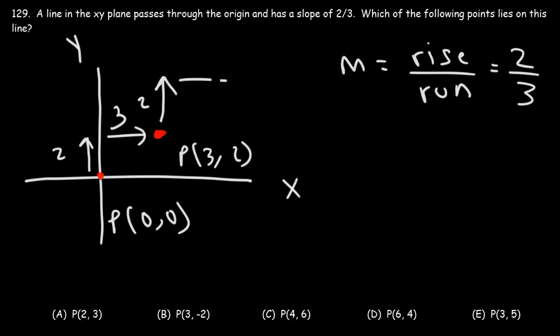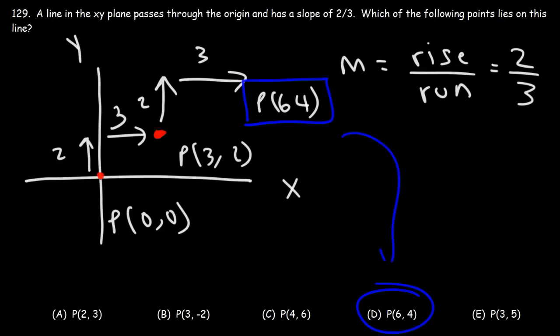Now we don't have the point 3, 2 in our answer, so we can find the next point. We're going to rise 2, travel 3 units to the right. And so the next point will be, if you add 3 to the x value, you'll get 6. And then if you add 2 to the y value, you'll get 4. Now we do have this answer. So answer choice D is the correct answer.